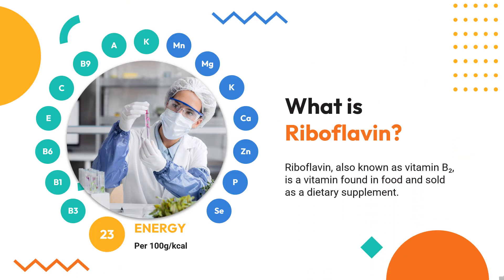What is riboflavin? Riboflavin, also known as vitamin B2, is a vitamin found in food and sold as a dietary supplement. It is essential to the formation of two major coenzymes: flavin mononucleotide and flavin adenine dinucleotide. Riboflavin was discovered in 1920, isolated in 1933, and first synthesized in 1935. In its purified, solid form, it is a water-soluble yellow-orange crystal and powder. In addition to its function as a vitamin, it is used as a food coloring agent.